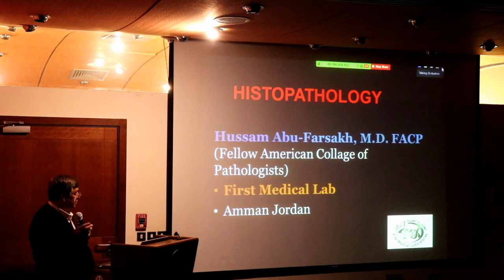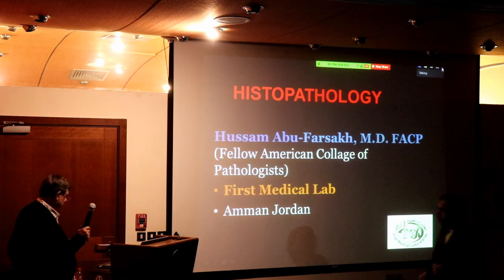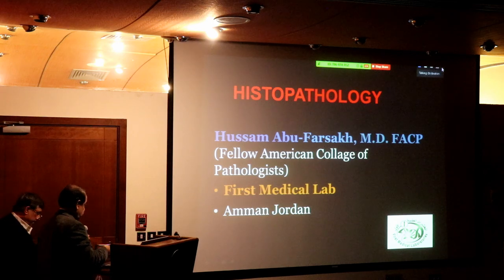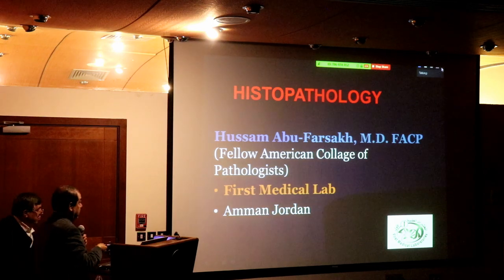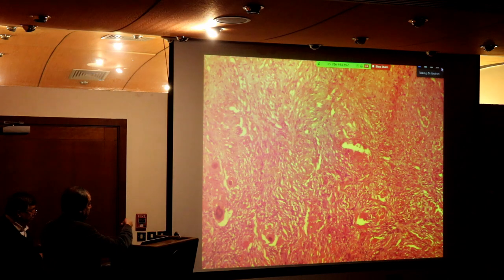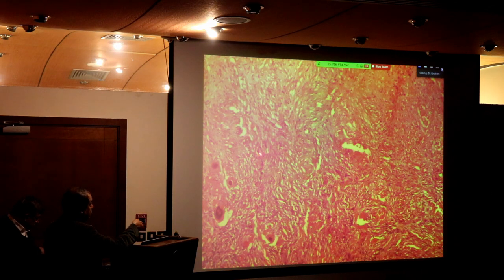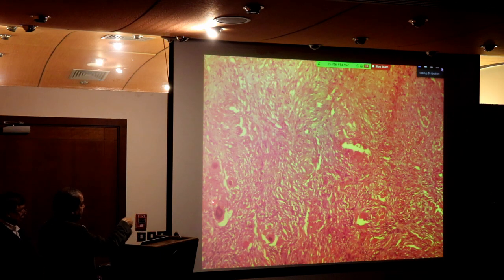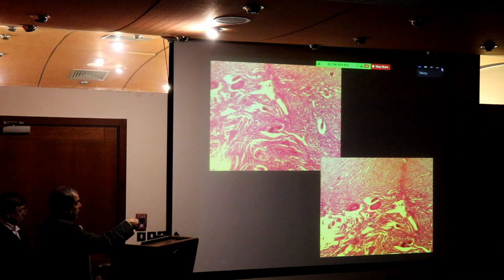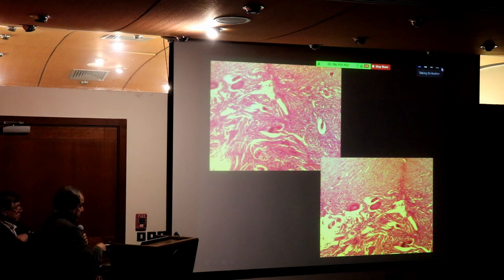The histopathology of petroclival meningioma is not different from other types of meningioma. The most common histology is the meningothelial meningioma, with a cartwheel appearance and some psammoma bodies. Some psammoma bodies are calcified due to ancient changes — quite long-standing meningiomas. More psammoma bodies usually indicate a more innocent or ancient meningioma.